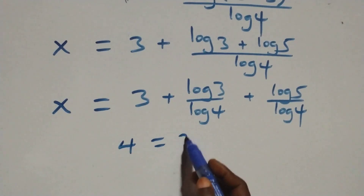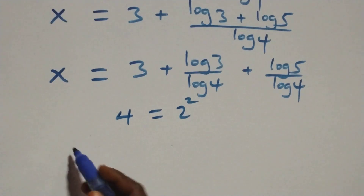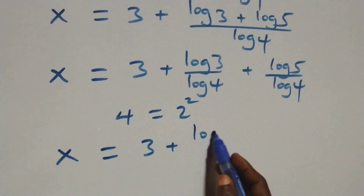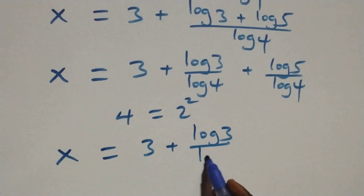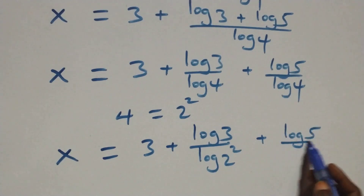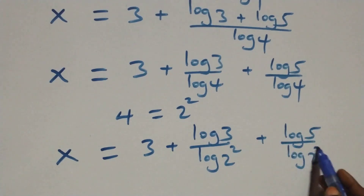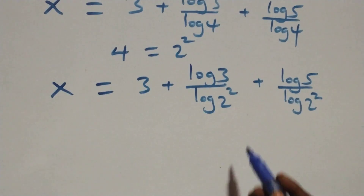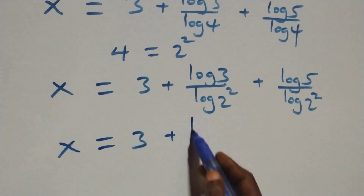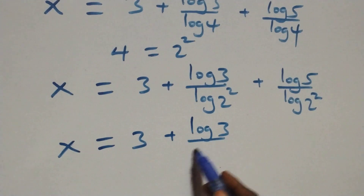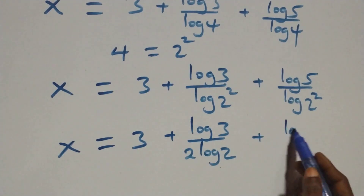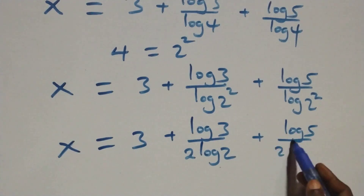We can express four as two times two, that is two squared. What we have becomes x equals three plus log fifteen over log two squared plus log five over log two squared. Applying the power law of logarithm, the two comes down and we have x equals three plus log fifteen over two log two plus log five over two log two.